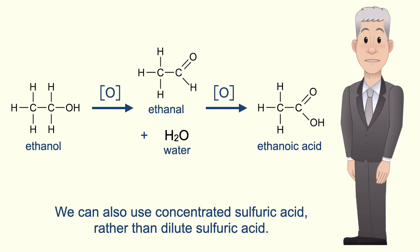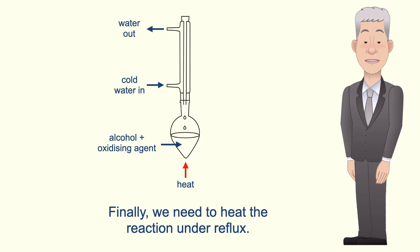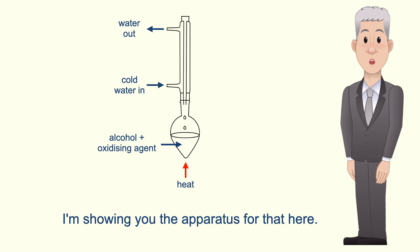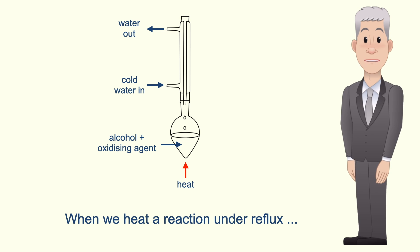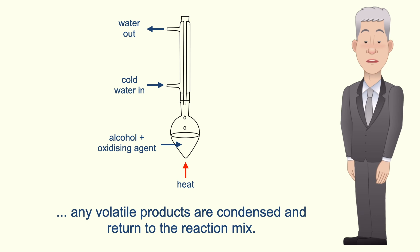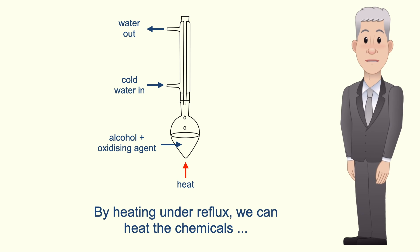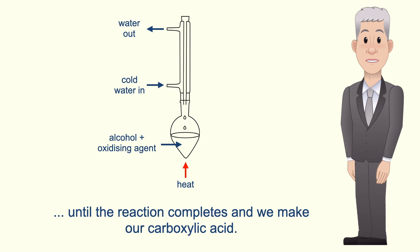We can also use concentrated sulfuric acid rather than dilute sulfuric acid. Finally, we need to heat the reaction under reflux, and I'm showing you the apparatus for that here. When we heat a reaction under reflux, any volatile products are condensed and returned to the reaction mix. By heating under reflux we can heat the chemicals until the reaction completes and we make our carboxylic acid.